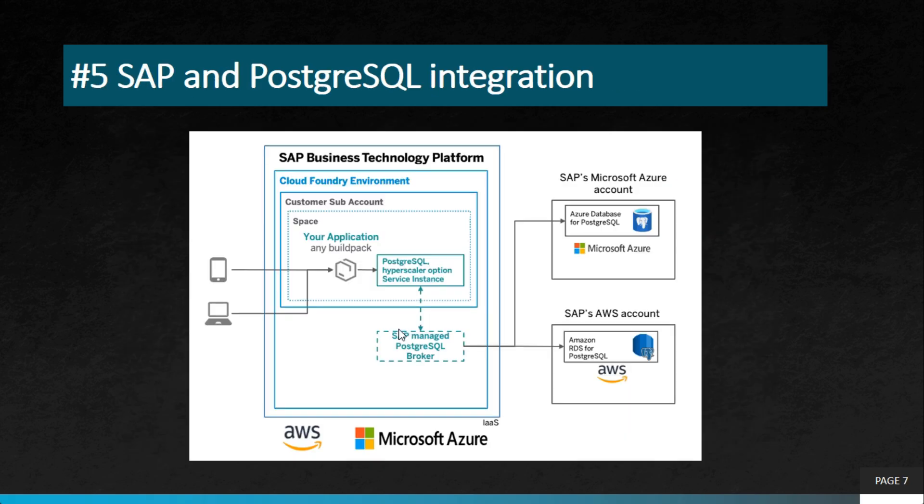The next project is SAP and PostgreSQL integration. This project involves integrating SAP systems with PostgreSQL, an open source relational database management system. Unlike MongoDB which is NoSQL, PostgreSQL is both SQL and relational. In this particular use case, both SAP HANA and PostgreSQL serve similar roles, and the integration enables businesses to store and manage data using both systems.